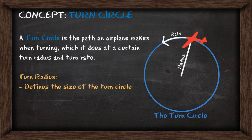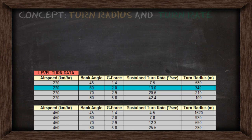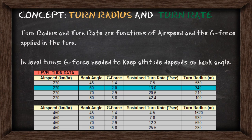The turn radius will define the size of the turn circle, and the turn rate will determine how fast the airplane moves around the circle. Turn radius and turn rate are both functions of airspeed and the G-force applied in the turn. So in a level turn, the G-force needed to keep altitude depends on the bank angle.